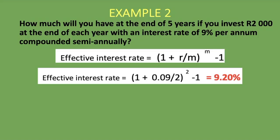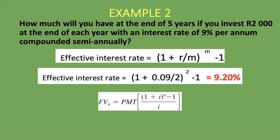Now that we have the effective annual rate of 9.20%, we can calculate the future value of the ordinary annuity. The PMT is R2,000, and our i is 0.092 — that's 9.20 divided by 100. Our N is 5, because the interest is now compounded annually, so it's 5 years times 1 compounding per year, which equals 5. We use 0.092 as i in the denominator as well.